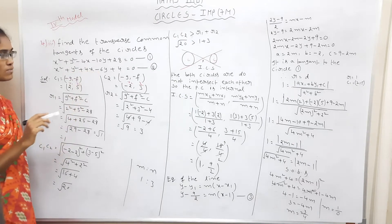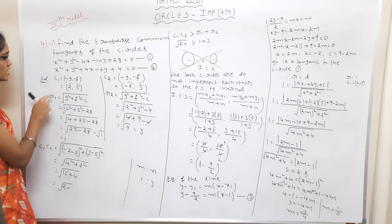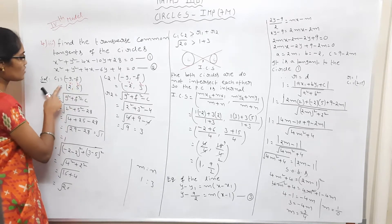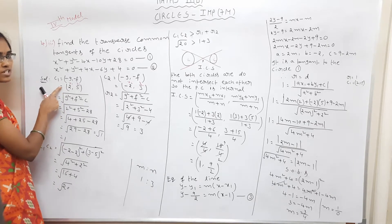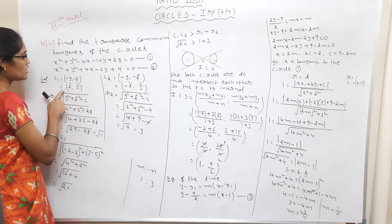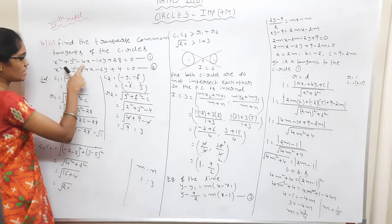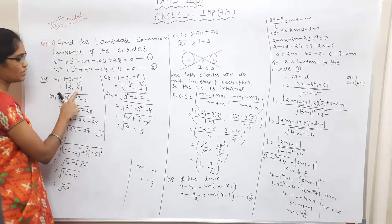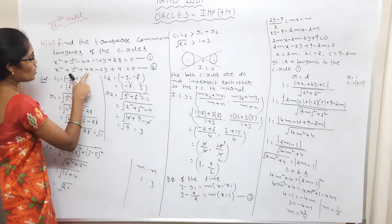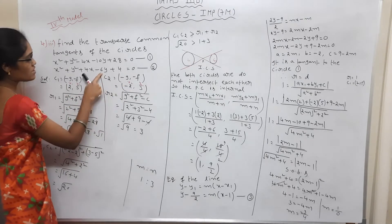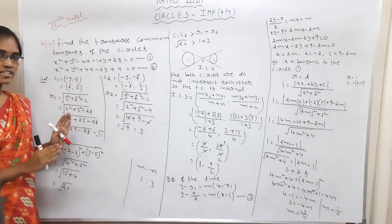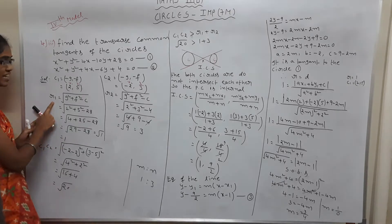For two circle equations, the center is found using: g = minus half of the x coefficient, and f = minus half of the y coefficient. So the center values give us minus 4 and minus 2, and for the second circle, the center is at minus 2 and half, giving values of plus 3. So the two centers are found.